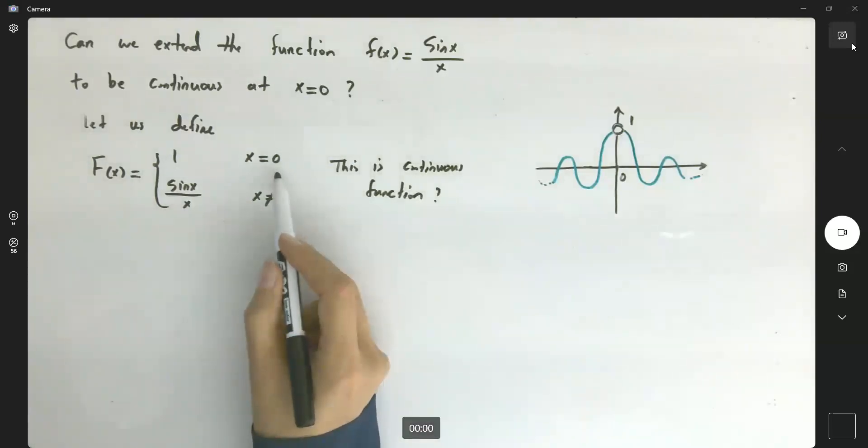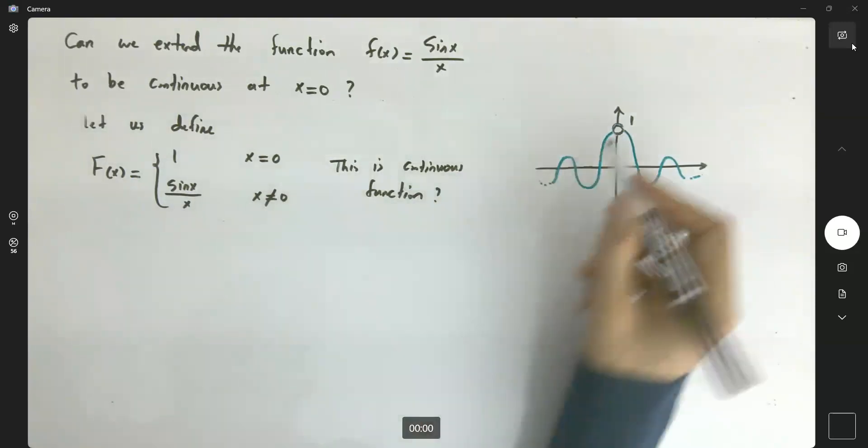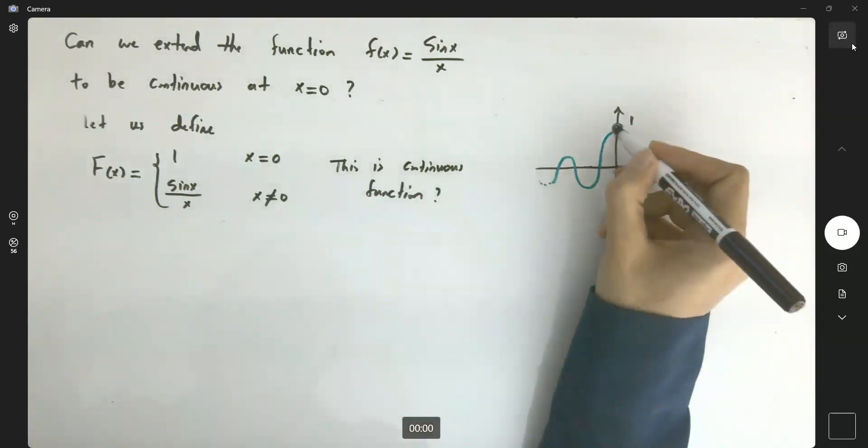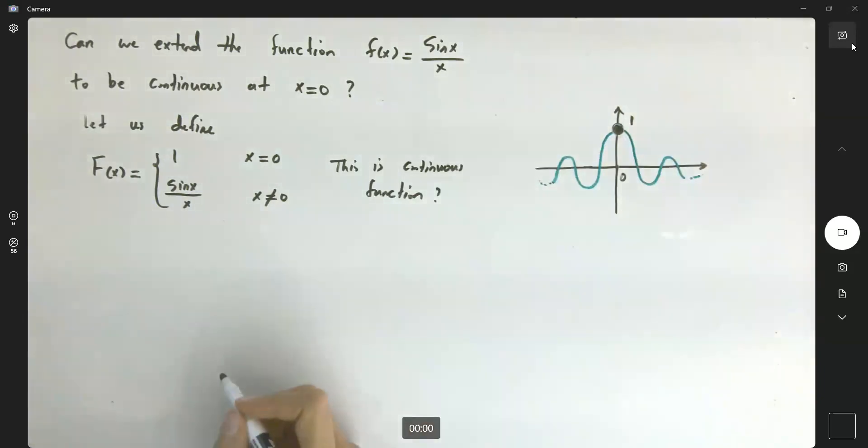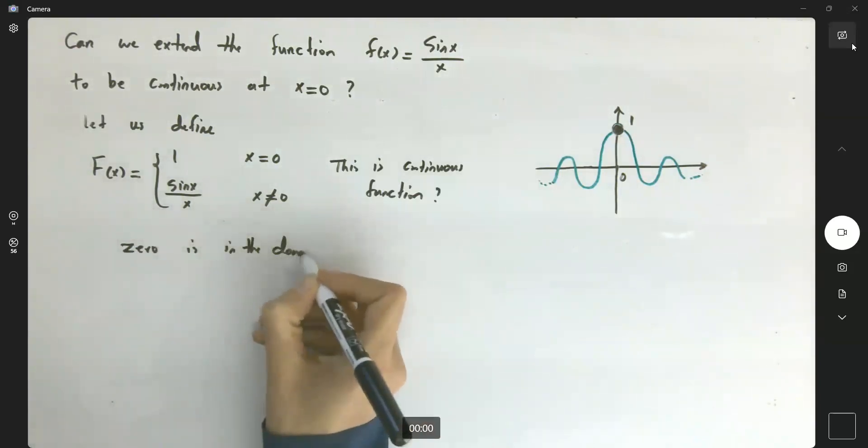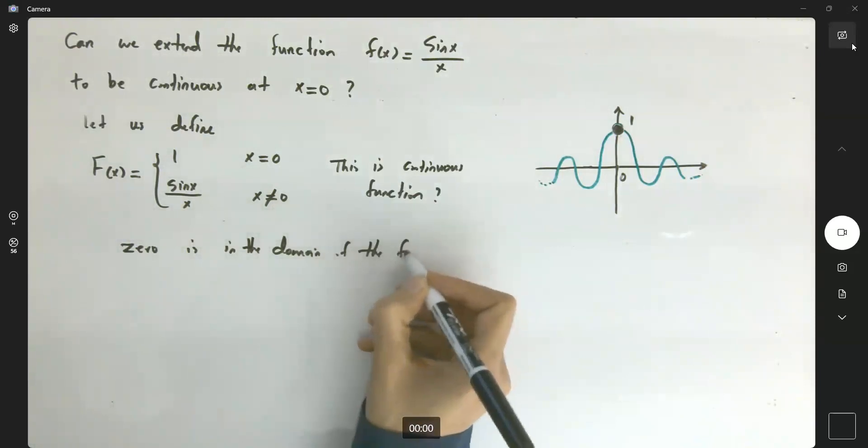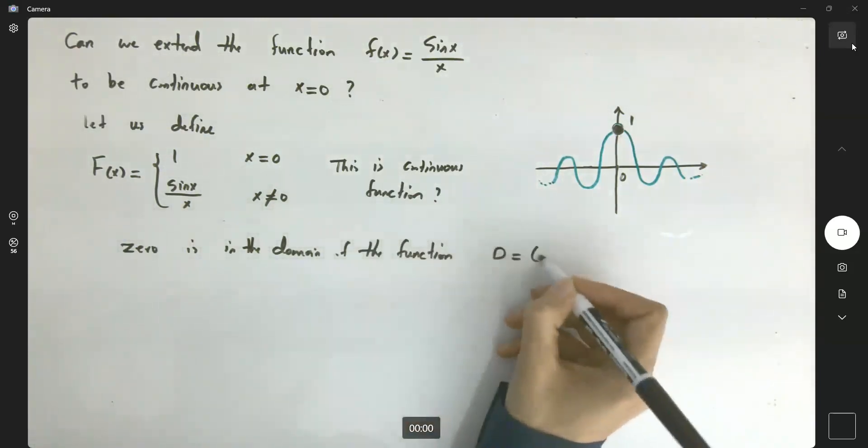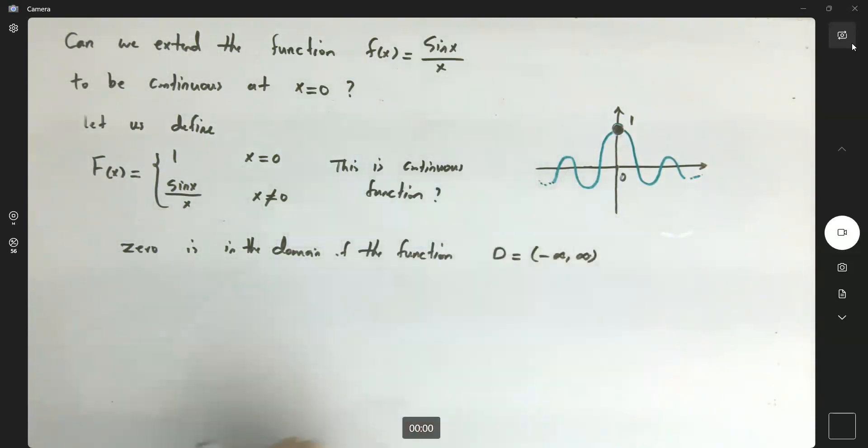First of all, 0 belongs to the domain of the function. Now that we define this function at 0, we fill this hole. The domain is negative infinity to positive infinity. The first condition is met.